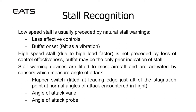Stall recognition. Low speed stall is usually preceded by natural stall warnings: less effective controls and buffeted onset felt as a vibration. High speed stall due to high load factor is not preceded by loss of control effectiveness — buffet may be the only prior indication. Stall warning devices are fitted to most aircraft and activated by sensors measuring angle of attack. A flapper switch is fitted at the leading edge, and an angle of attack vane or probe may also be used.